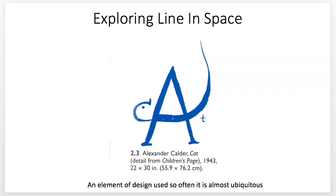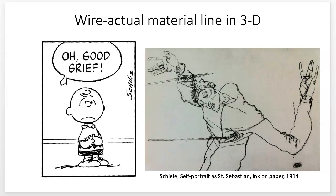Hey class, for the next project you're going to be exploring line and space through wire. We could think of it as a linear mass or volume, like a pipe or a pillar. A mass or volume stretched or elongated would appear as a line, and that's basically what wire is. So you're going to be using wire, and we'll be talking a bit about what line is. We're going to be using actual material, so it'll be in 3D, not just ink on paper.